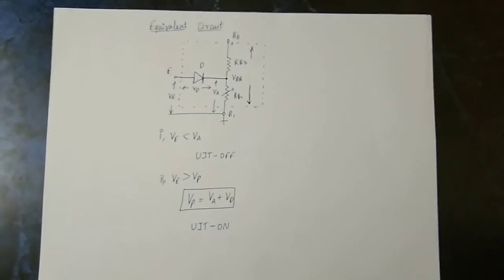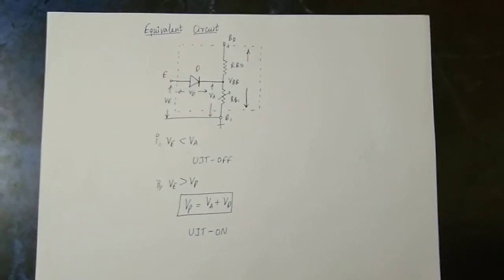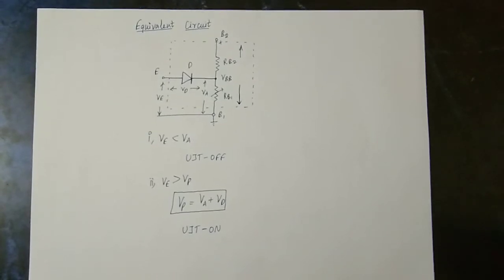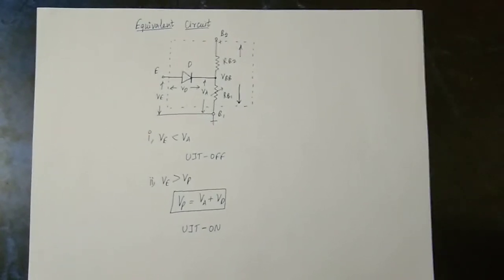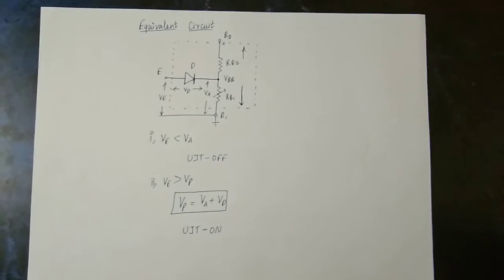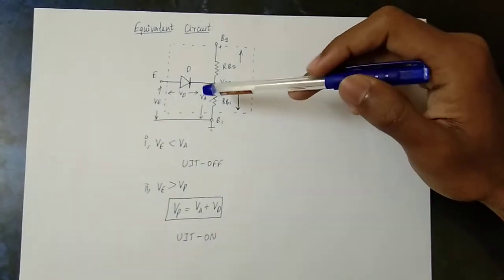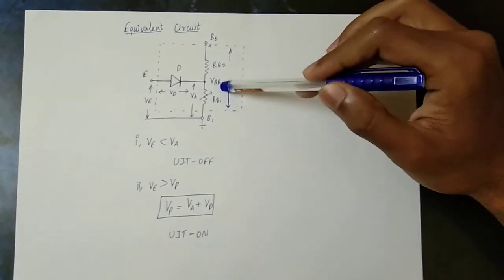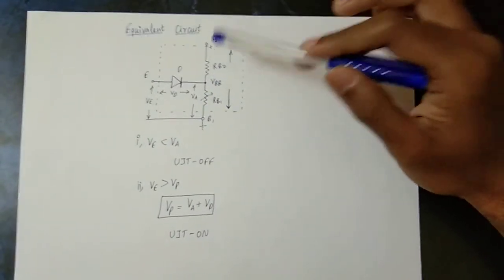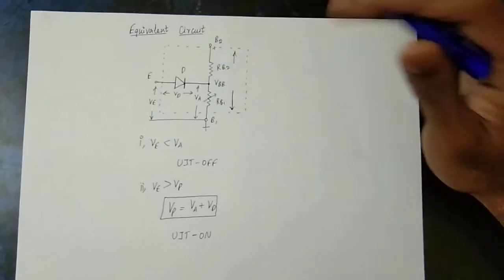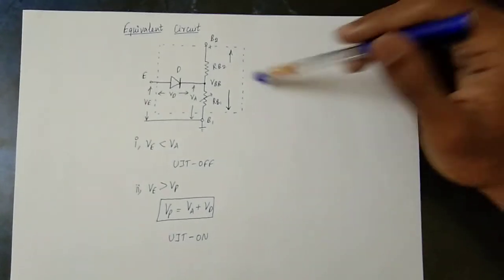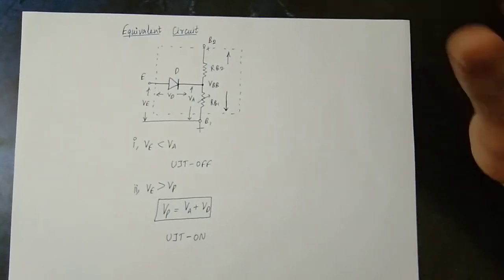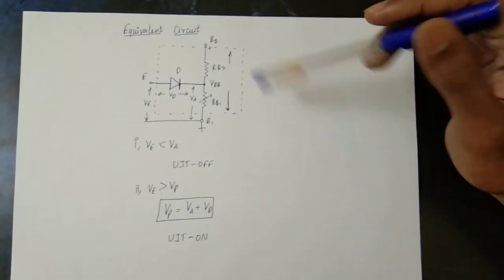There is an equivalent circuit of UJT. In this UJT, I'm going to show you a diode — a PN junction diode. This is RB2 and RB1. This is VBB. So these are the two resistances. I'm going to show you the biasing. This is the potential divider and this is the voltage divider.